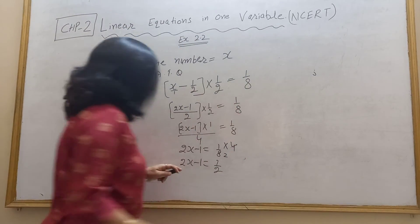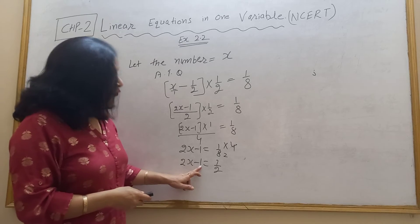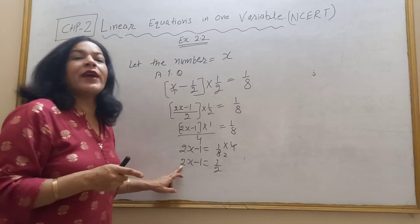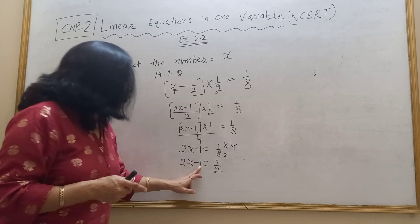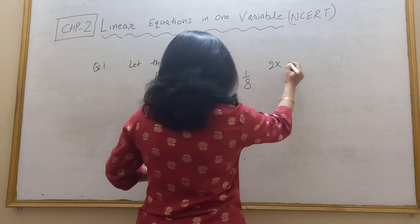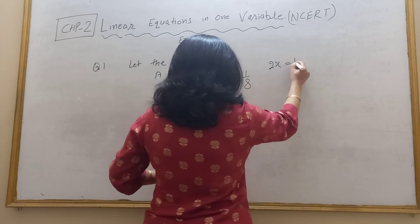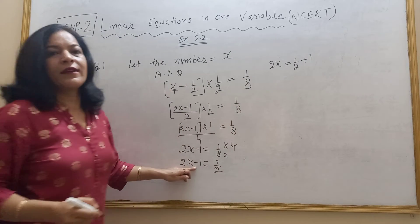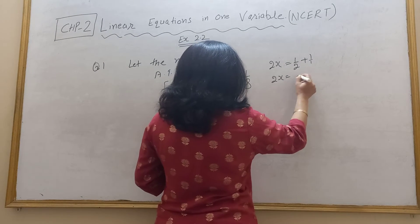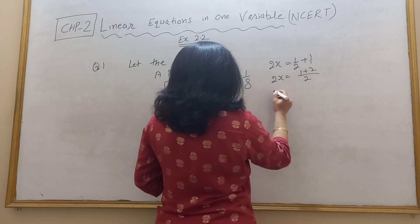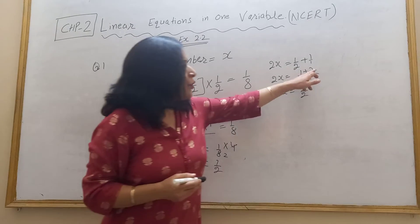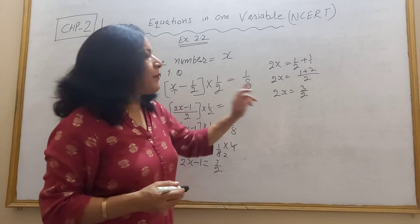Next. So 2x minus 1 is equal to 1 upon 2 plus 1. So 2x again LCM is equal to 3 upon 2. So 2 plus 1 is 3 upon 2. Now we need to find out.